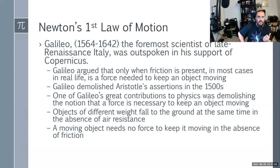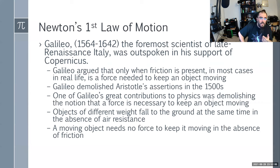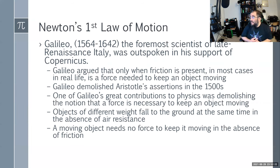Along came Galileo, the foremost scientist of late Renaissance Italy, who was outspoken in his support of Copernicus. Galileo argued that a force is only needed when friction is present. In most cases in real life, a force is needed to keep an object moving; otherwise friction will resist and stop it. He demolished Aristotle's assertions. One of Galileo's greatest contributions to physics was demolishing the notion that a force is necessary to keep an object moving — to start it moving, yes, but not to keep it moving.